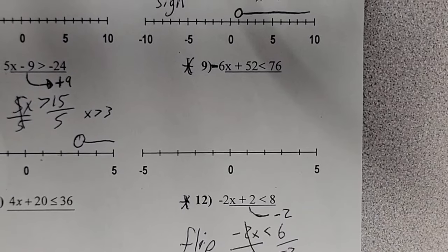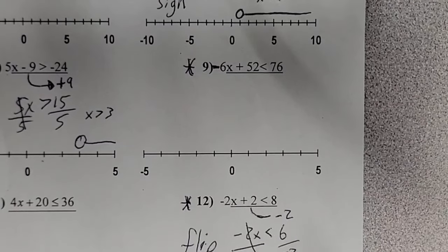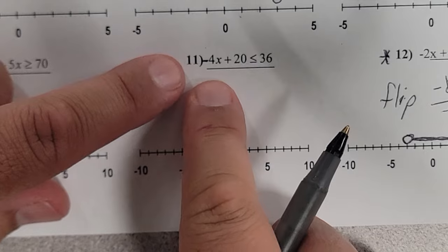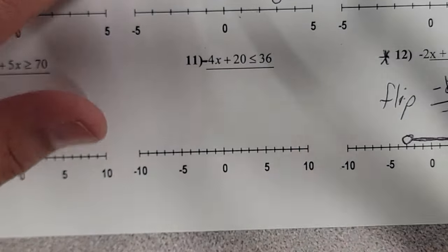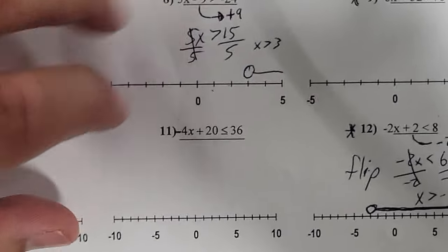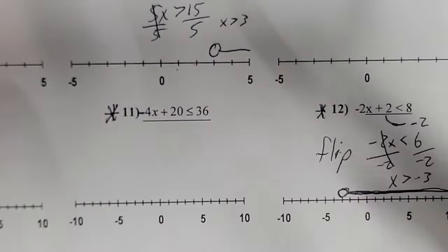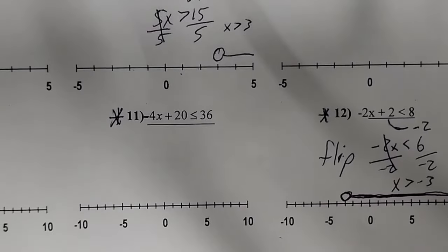Number 11 also has a negative 4x, so those are the flip ones — remember to add that negative. Once you get it done, you just have an exit ticket — four questions on the exit ticket and that's it.